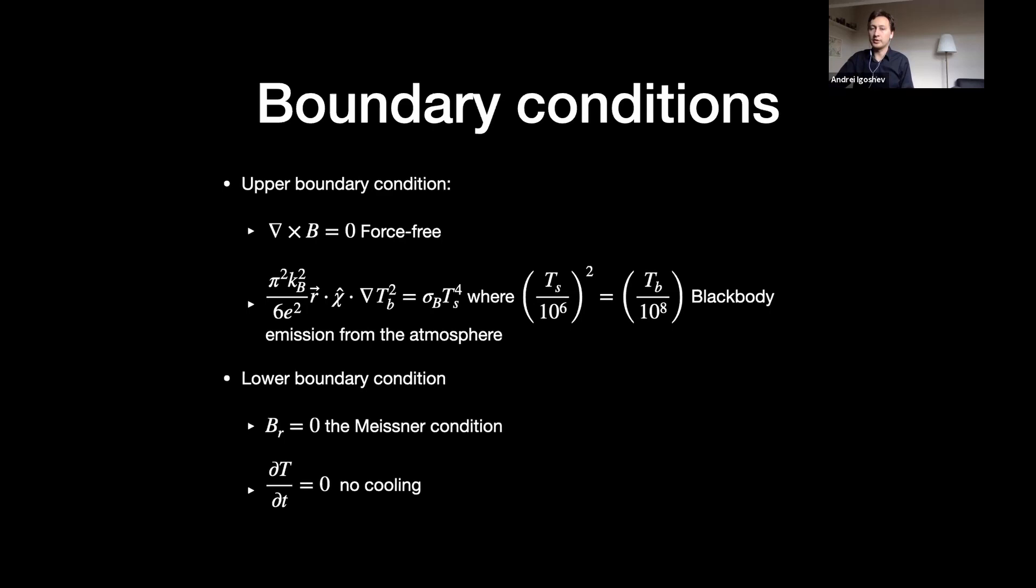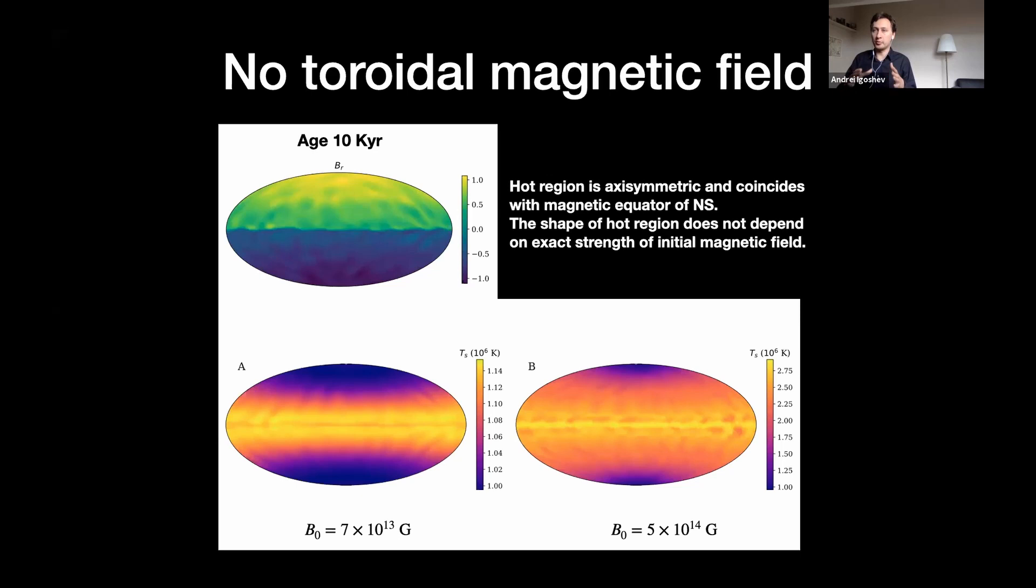Here is the simplest model when there is a simple dipolar poloidal magnetic field—there is no toroidal magnetic field. In this case, we see that poles are colder and the equator is hotter because the equator is thermally isolated mostly from the core, and a lot of heat is released around the magnetic equator because of ohmic decay of the magnetic field.